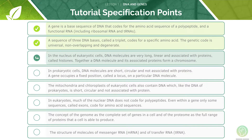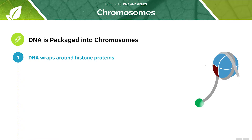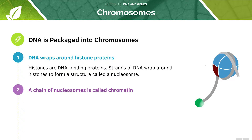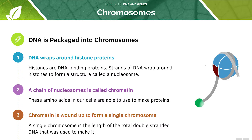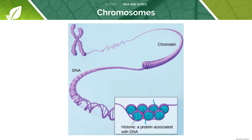Now let's look at histones and chromosomes. DNA is very long and needs to be packaged in order to fit inside the nucleus. First, the DNA must wrap around histone proteins to form nucleosomes. Next, the chain of nucleosomes is called chromatin. The chromatin is wound up to form a single chromosome. A single chromosome is the length of the total double-stranded DNA that was used to make it. Humans have 23 pairs of chromosomes, giving a total of 46 chromosomes in the nucleus of every cell, with two exceptions which we'll look at later.